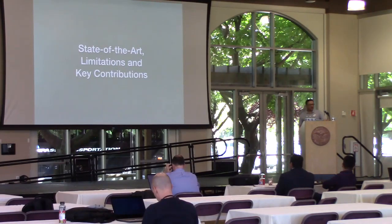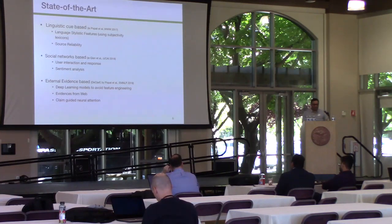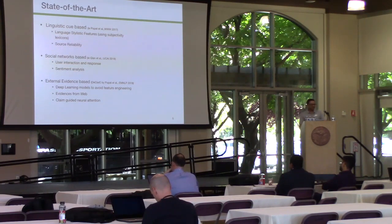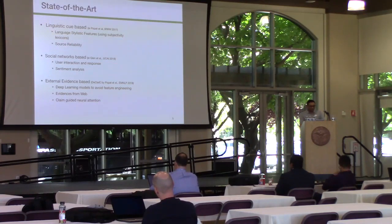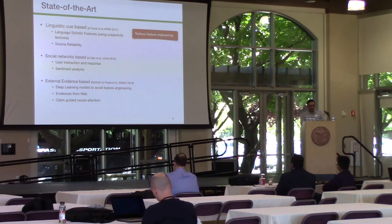Moving on to state-of-the-art work and its limitations. We can divide previous work into three categories. The first kind deals with only the content of the news — they use stylistic features, linguistic cues like part-of-speech, manually created lexicons, and source reliability, such as whether the news was published on BBC or some less credible portal. But the problem with this approach is it heavily relies on tedious feature engineering or hand-crafted features.